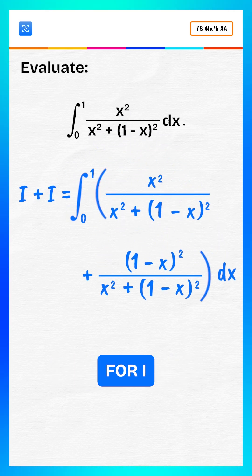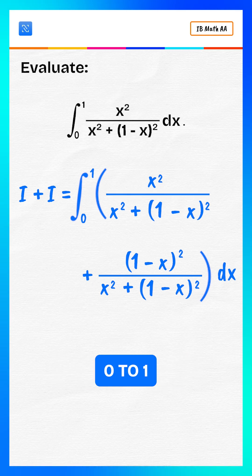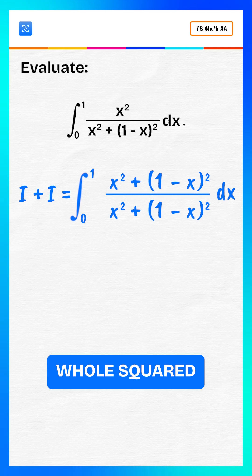Now add the two expressions for i. i plus i equals integral from zero to one of x squared plus one minus x whole squared divided by x squared plus one minus x whole squared, dx.